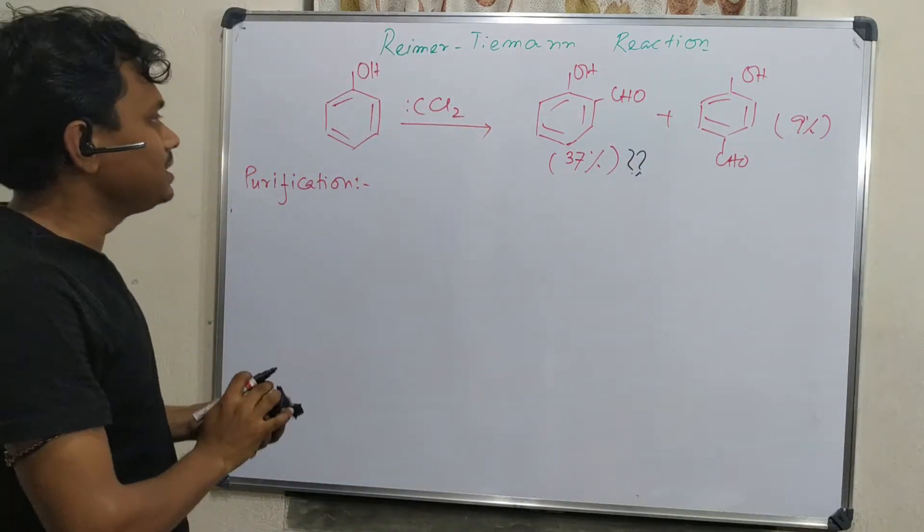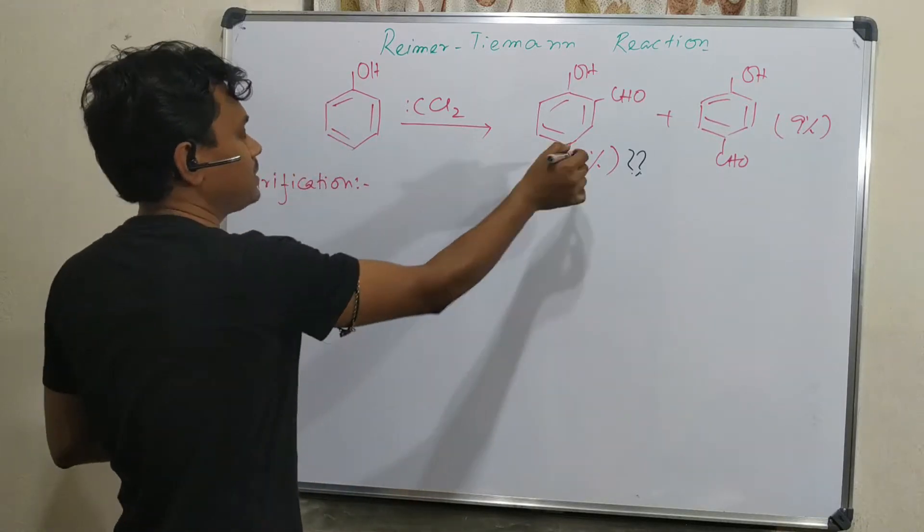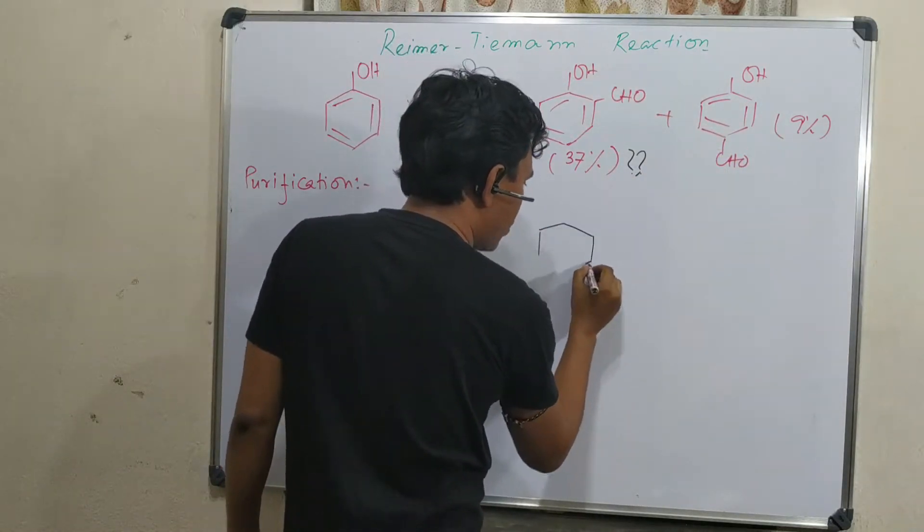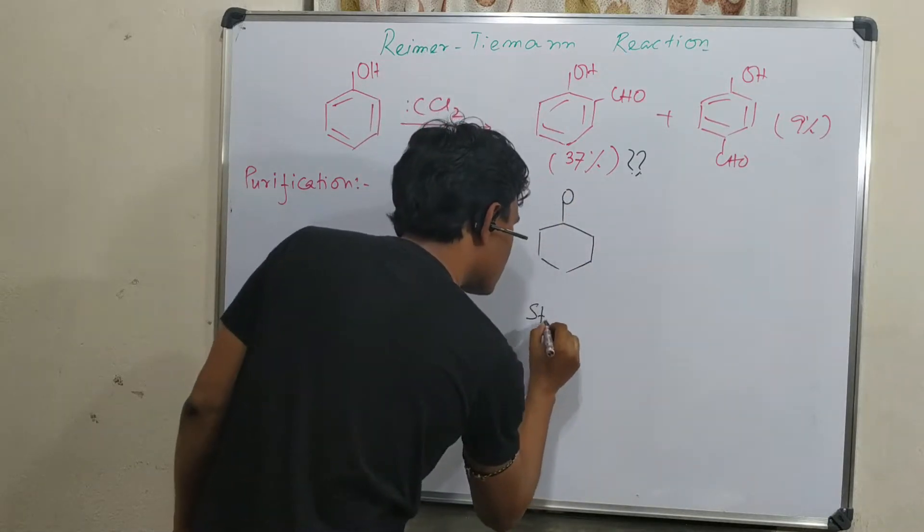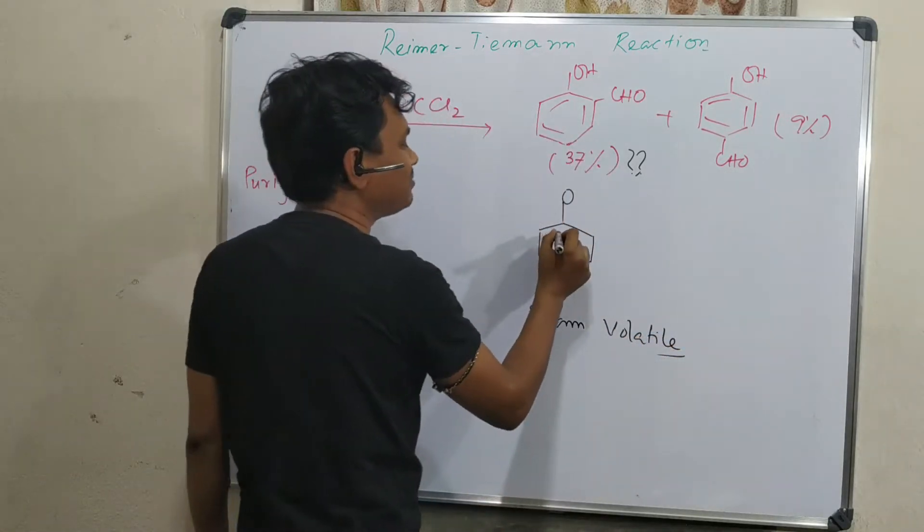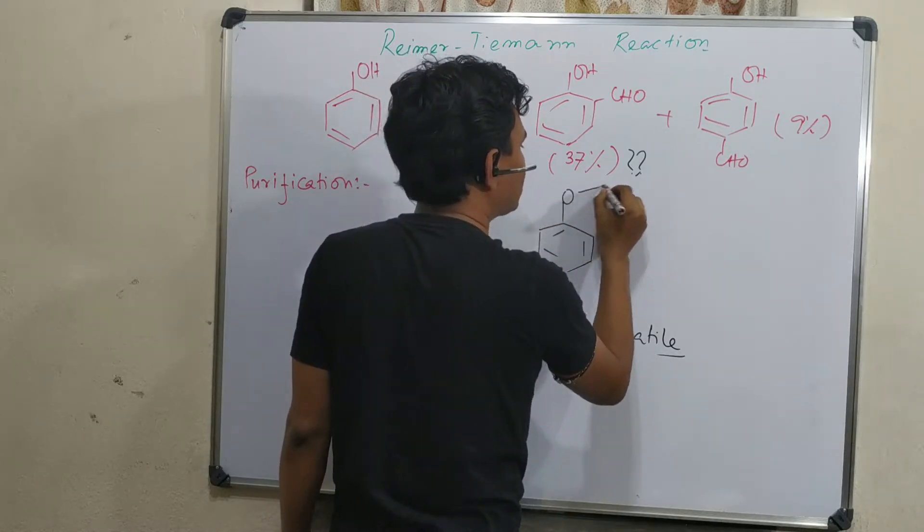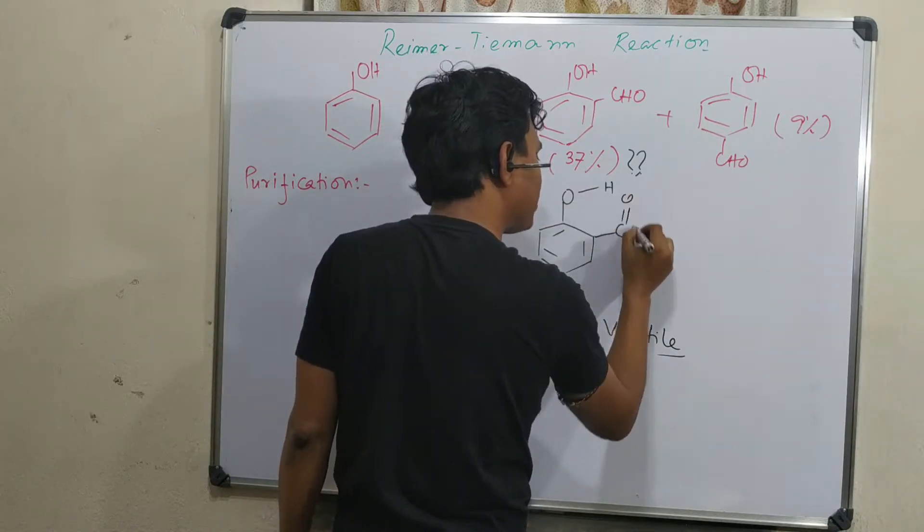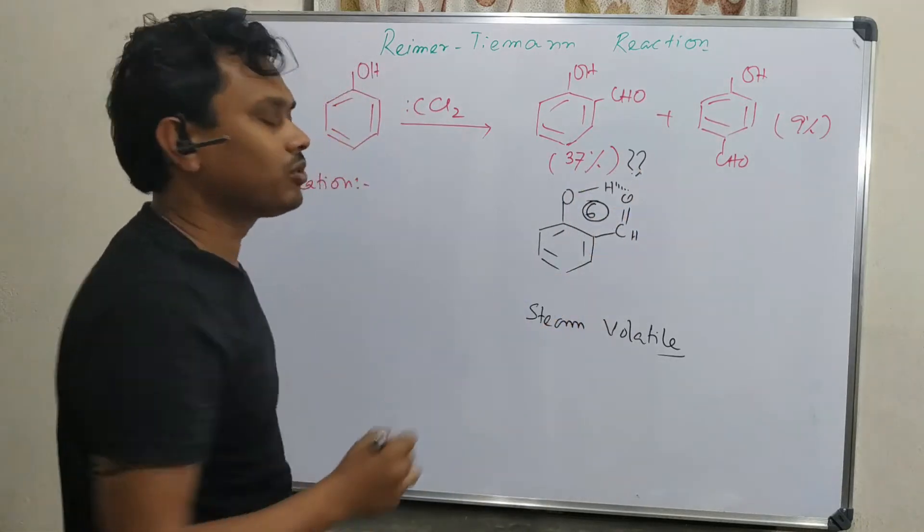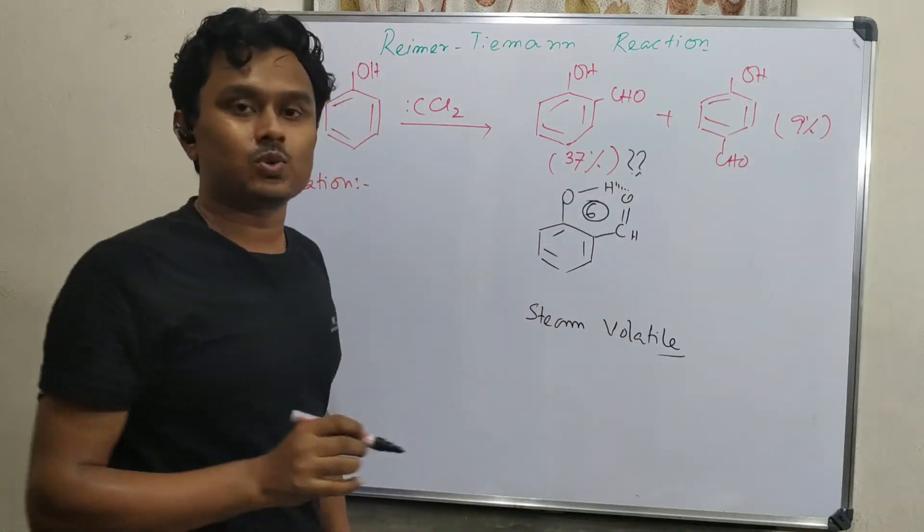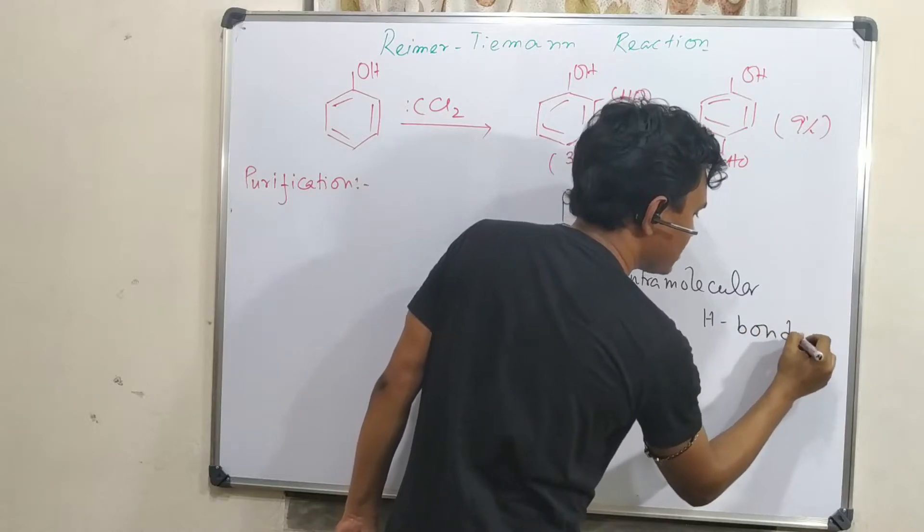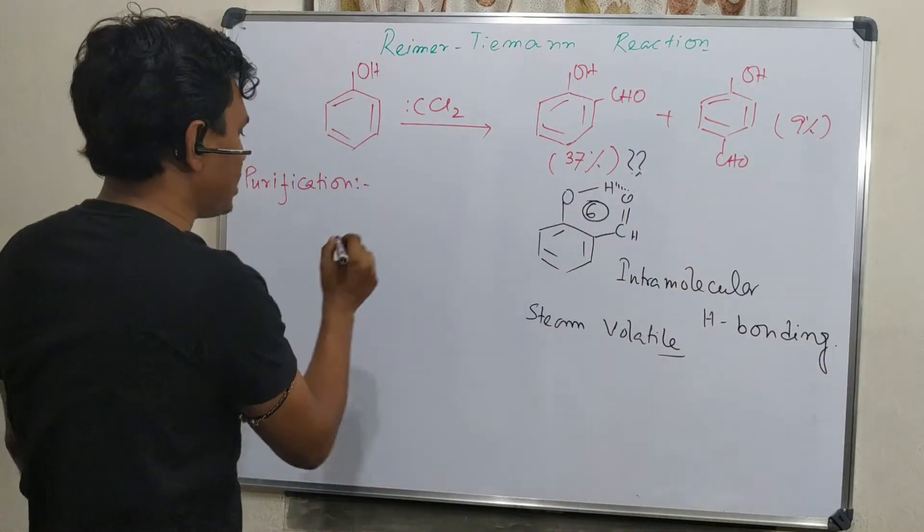So first let's explain something important. This is ortho-hydroxybenzaldehyde, and this ortho isomer is volatile. What do I mean? Its boiling point is less. And what happens? This ortho isomer can form intramolecular hydrogen bonding. But in case of the para isomer, intramolecular hydrogen bonding cannot form. So that's why the ortho isomer has a low boiling point compared to the para isomer.